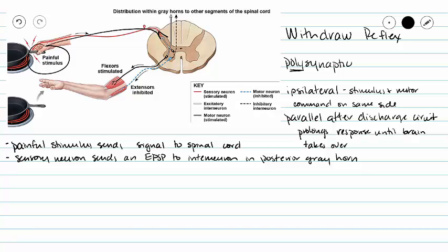So our interneuron then sends an EPSP to our flexors, but at the same time, we send an EPSP to a second interneuron.